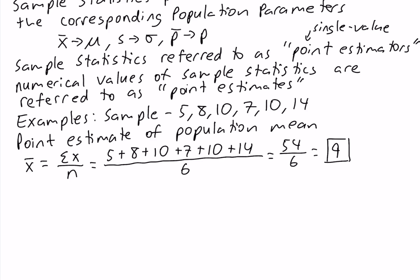This doesn't mean that the population mean is equal to 9, but this is our estimate of the population mean. The population mean might be 9, but likely it's not. However, it's probably going to be close to 9 since our sample comes from the population.